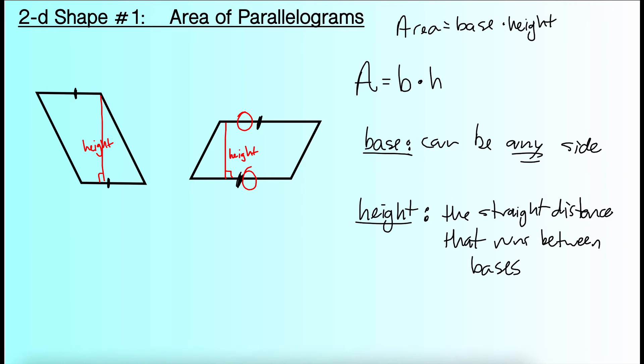This will make more sense as we start to do examples. So let's just jump right into some examples. The main thing to pull from this page though is that area equals base times height is our formula. The base can be any side and the height is the straight distance, and you'll know it's straight because of the 90 degree angle it forms. That runs between the bases.